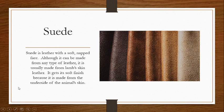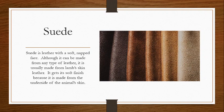Suede is leather with a soft, napped face. It's not quite as shiny as other leathers and has a little texture. You can brush it one way and it's one color, brush it another way and it's another color, depending on how long the nap is. It's finished to have the face from the underside of the skin instead of the top side, and that's how it gets its soft finish. It can be made from any type of leather, but usually it's made from lambskin.